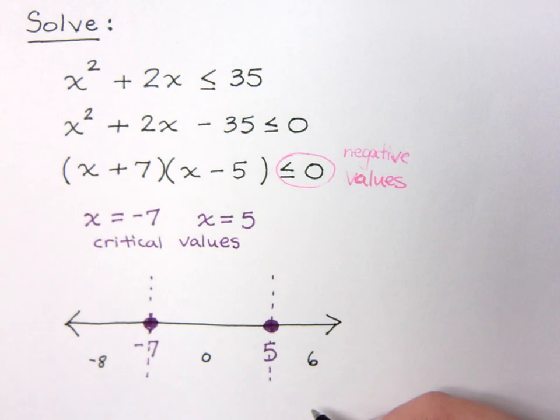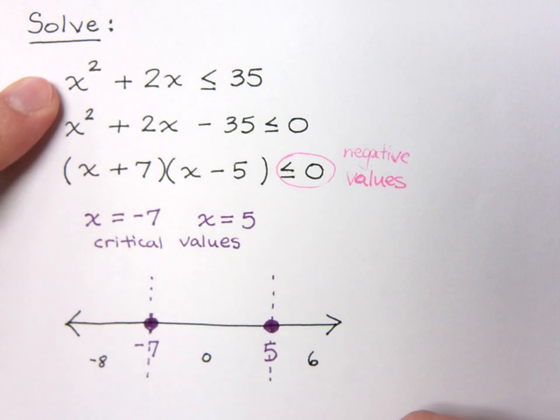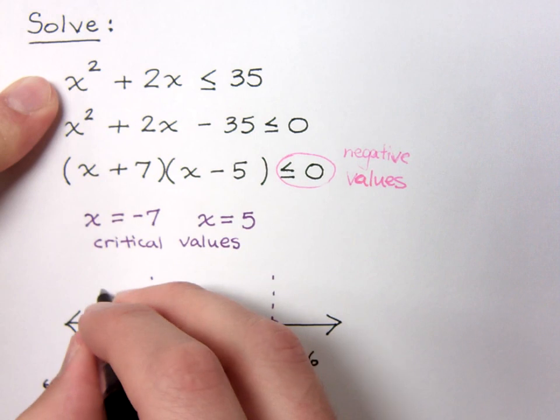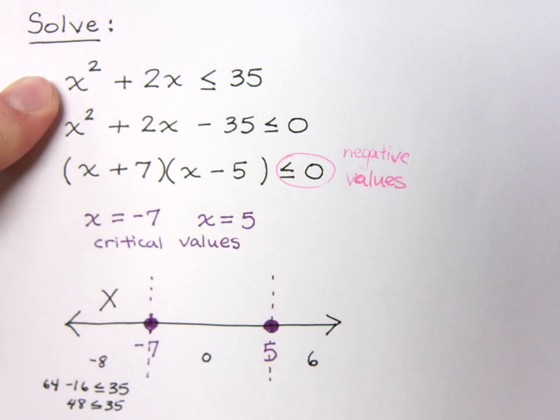Now, it's best to check against the original. If I were to check negative 8 against the original, let's see what I would have. By plugging that in, that would give me a positive 64 minus 16. And I want to know, is that less than or equal to 35? 64 minus 16 is 48. Is 48 less than or equal to 35? And the answer, of course, is no. So that side is not valid.